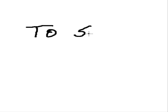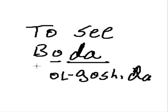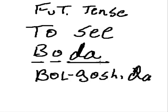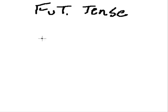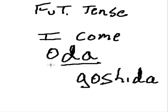The next one is boda, and that is to see. Here's that da — it's going to become goshida. This time we have an o, and that becomes an ol sound. Drop down the b: bolgoshida. To see, future tense, will see. Next is oda — to come. The da becomes goshida, and the o becomes an ol. I come becomes I will come: ogoshida.